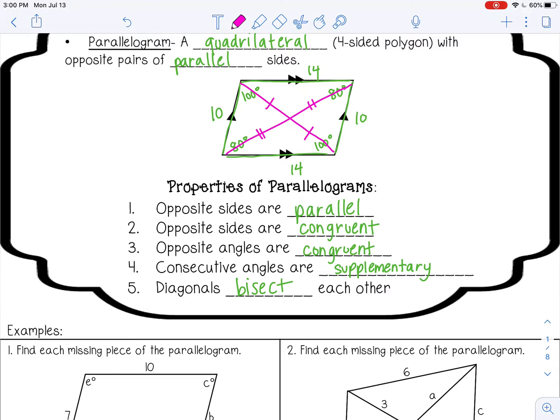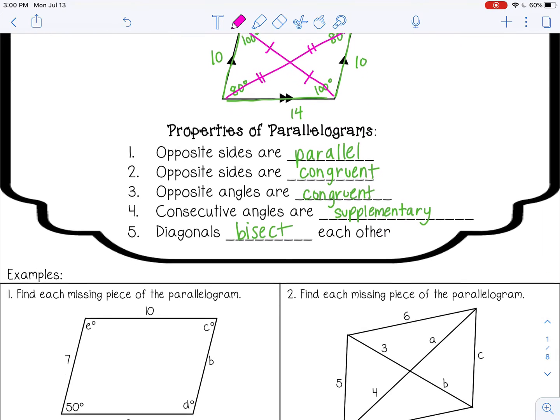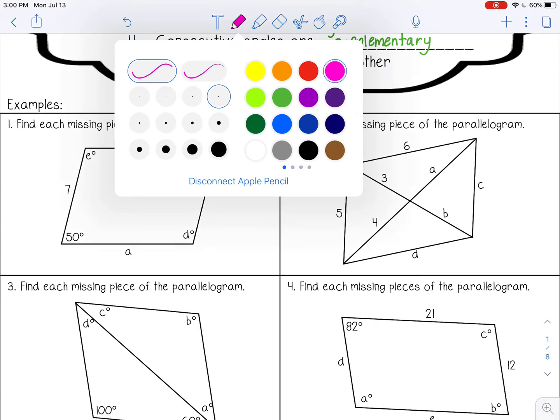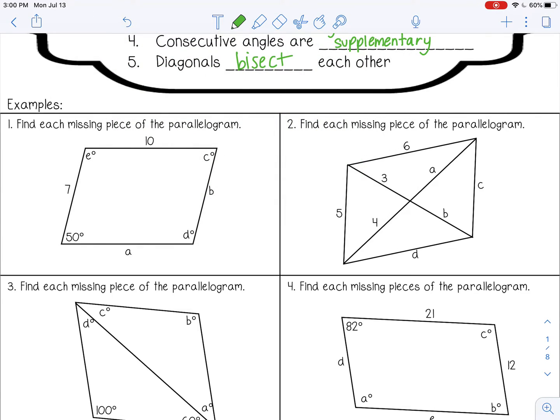Okay, so let's go over some examples. Number one says find each missing piece of the parallelogram. So we're given some information and we need to find the rest of the sides and angles.